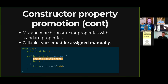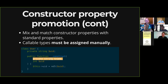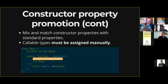One gotcha to remember is that callable types still need to be assigned manually. There's something about how PHP has handled callables since closures were added back in 5.3 — you can't call them as a normal function, you have to enclose them in parentheses. For the same reason, you can't declare a callable property via constructor property promotion. You'll get an engine error when you try.